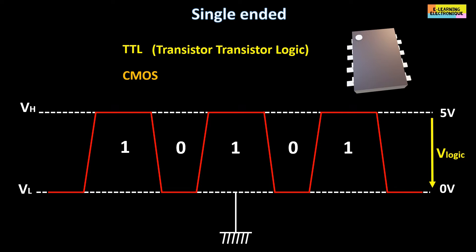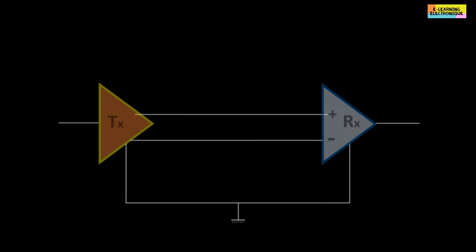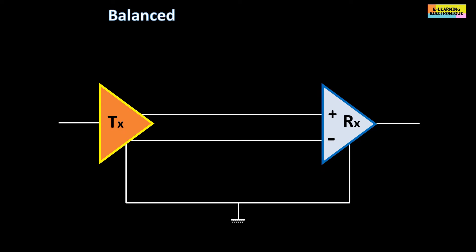As we said previously, these circuits connected in asymmetrical mode are sensitive to electromagnetic interference phenomena and consequently the quality of the transmitted signal can be altered. To overcome this problem, a connection technique known as balanced connection is used.